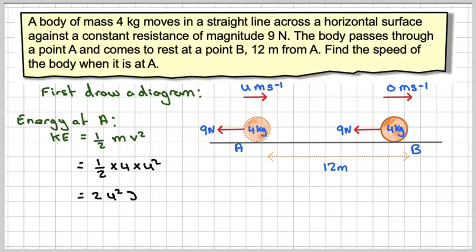Half of 4 is 2, so it will be 2u squared joules. And then we'll consider the energy at B.